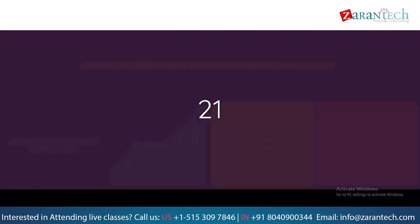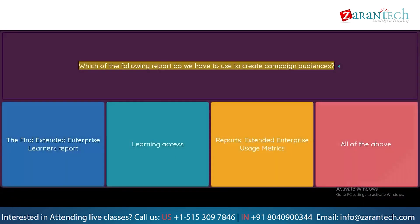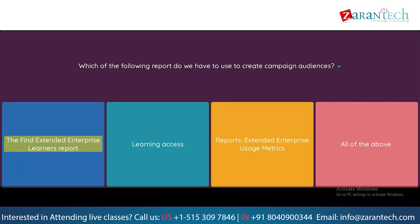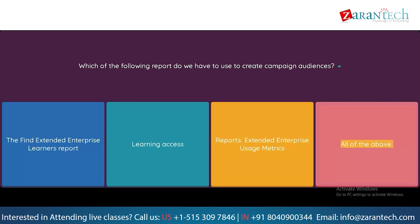Question: Which of the following reports do we have to use to create campaign audiences? Option 1: The Find Extended Enterprise Learners report. Option 2: Learning Access. Option 3: Reports Extended Enterprise Usage Metrics. Option 4: All of the above.